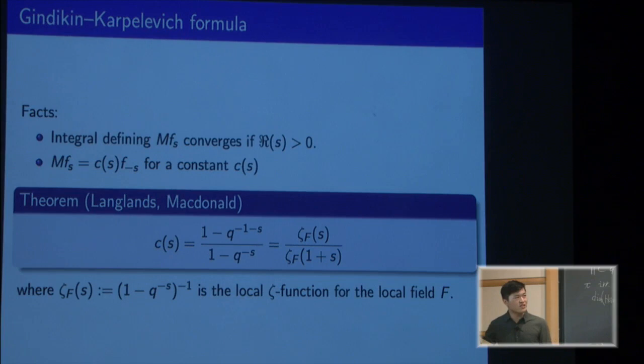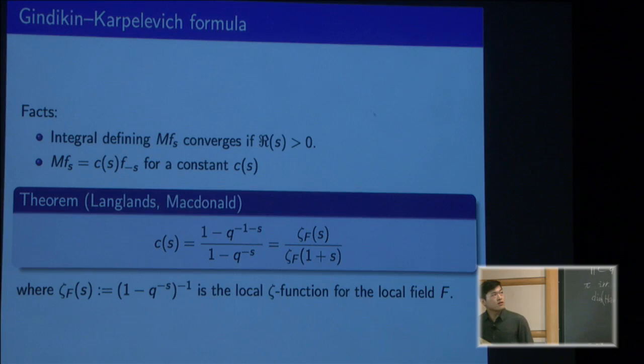To give it this uniform presentation, you also notice that it's this ratio of zeta factors, where now we're considering the zeta function for the non-archimedean local field, which is just defined as 1 minus q to the minus s to the minus 1.